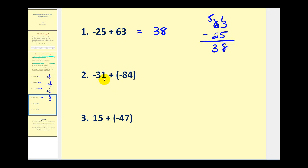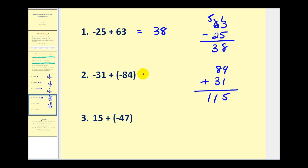Number two: we have negative thirty-one plus negative eighty-four. Again, we'll take the absolute value of both, which would be thirty-one and eighty-four. But since they have the same sign, we'll add them this time — we get one hundred fifteen. And since both integers were negative, our sum will be negative one hundred fifteen.